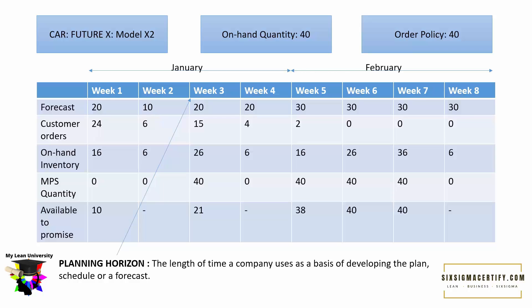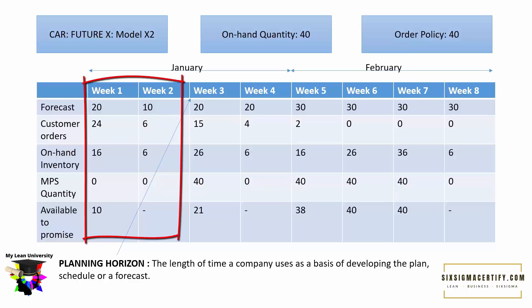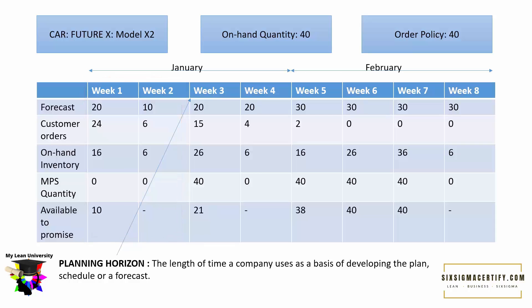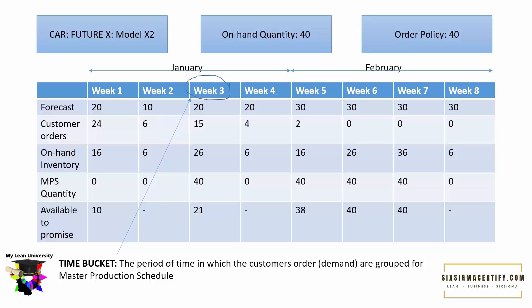Sometimes we can also freeze the Master Production Schedule. If there are fluctuations in demand, we cannot change a frozen manufacturing schedule. For example, if we freeze week one and week two, we cannot produce extra goods or promise more or fewer items to customers. This is called freezing. The small time intervals — week one, week two, week three — are called time buckets: the periods in which customer orders or demands are grouped for the MPS.